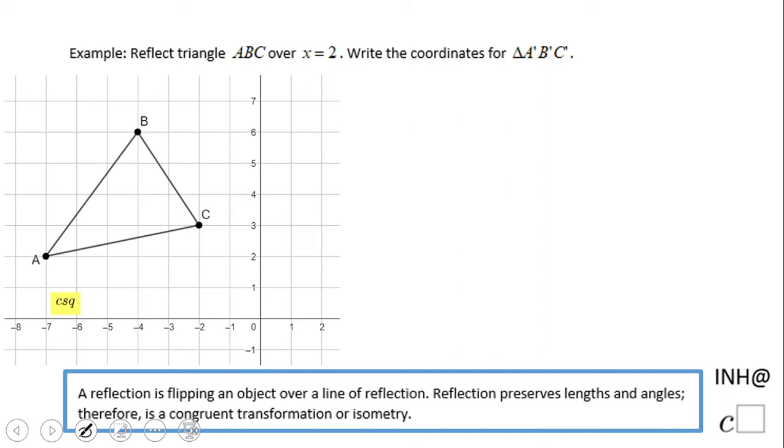Welcome to I Need Help at C Squared. Let's take a look at this problem. In this problem we reflect triangle ABC over x equals 2. x equals 2 is this line right here, and they want us to give the coordinates of that reflection. Obviously that triangle is going to be somewhere here, something like that.